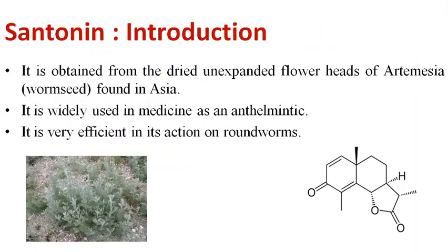First, an introduction to centonin. It is obtained from the dried unexpanded flower heads of artemisia, also known as worm seed, and it is found in Asia. Its use is that it is widely used in medicine as an anthelmintic, meaning it is a useful medicine to expel intestinal roundworms.